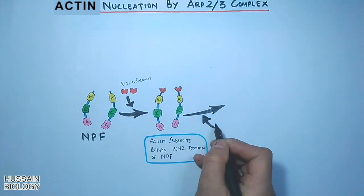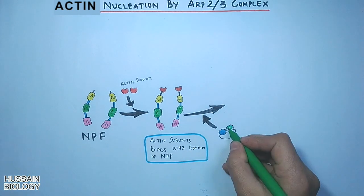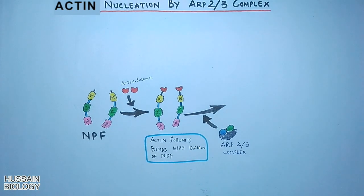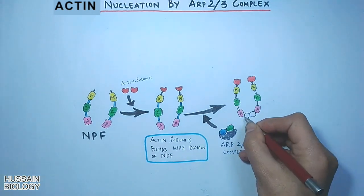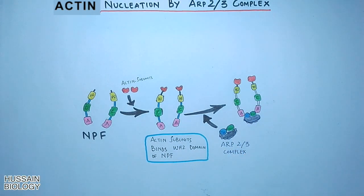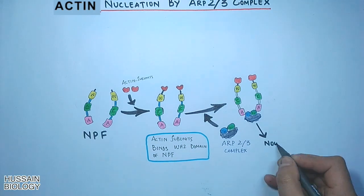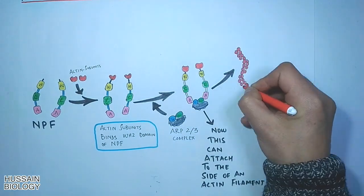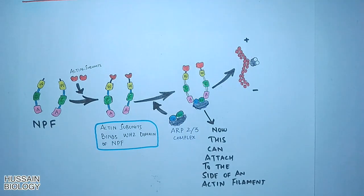Then in the next step, the ARP2/3 complex binds the A domain of NPF, nucleation promoting factor. So a complex formed by the nucleation promoting factor and ARP2/3 complex can attach to the side of the actin filament as shown in the diagram.